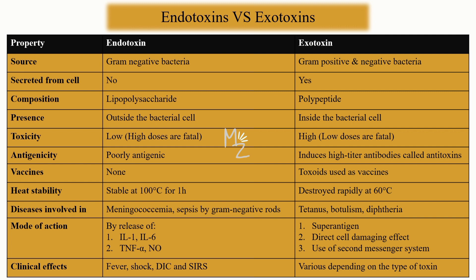The typical diseases involving endotoxins include meningococcemia and sepsis caused by gram-negative rods. Exotoxins are involved in tetanus, botulism, and diphtheria. The mechanism of endotoxin involves the release of certain cytokines like interleukin-1, interleukin-6, tumor necrosis factor alpha, and nitric oxide.